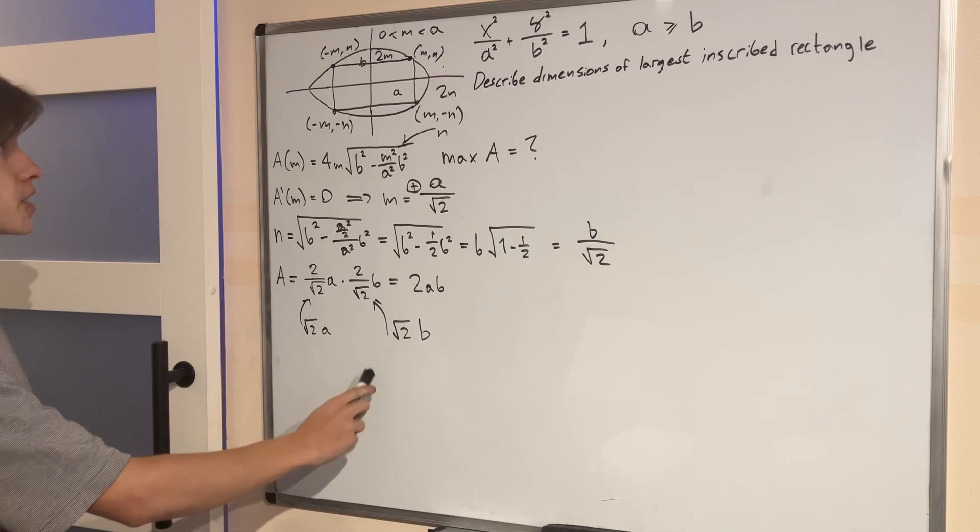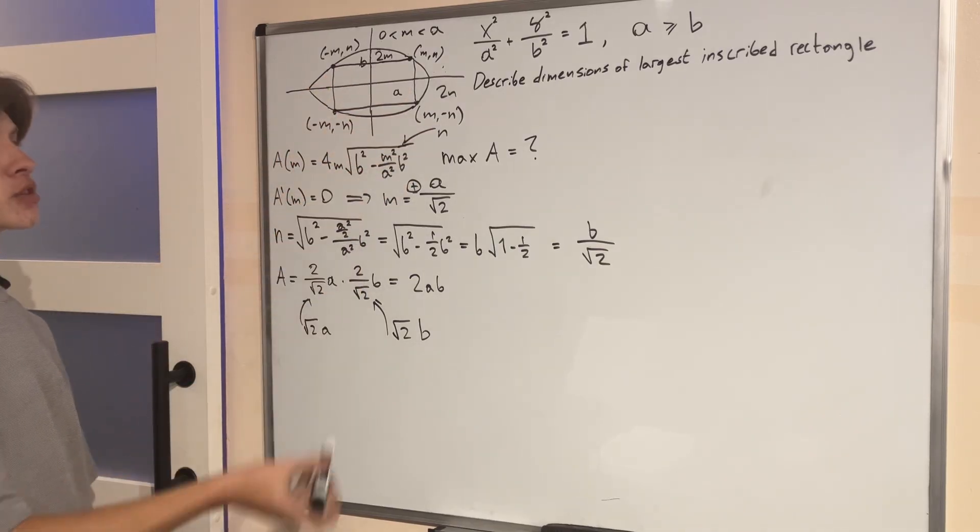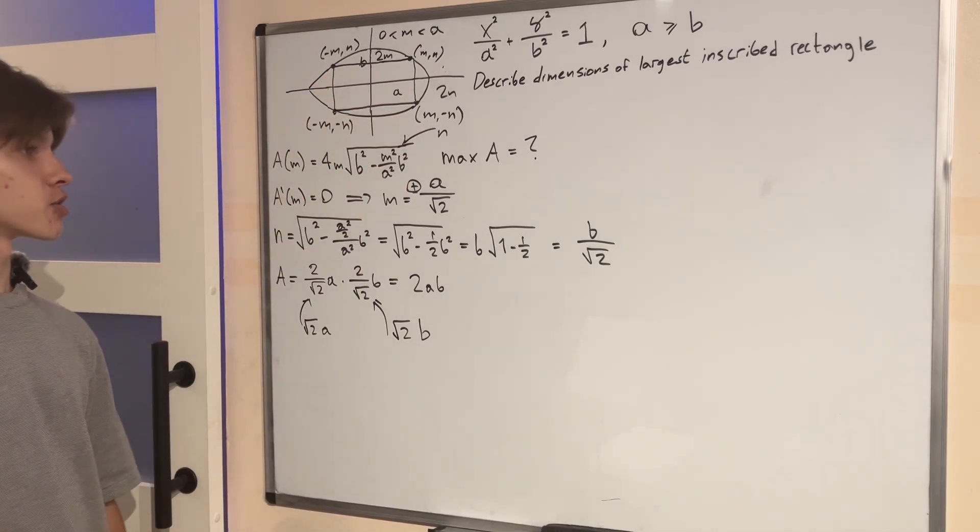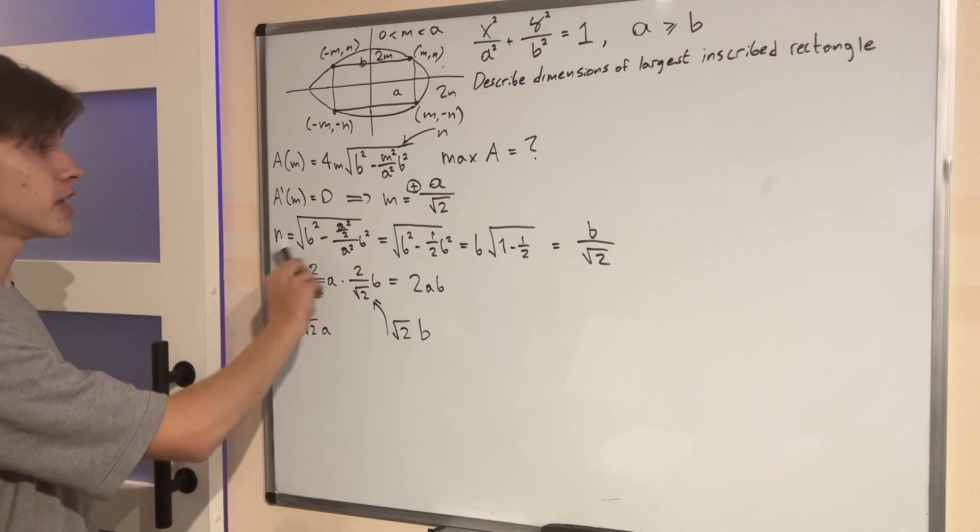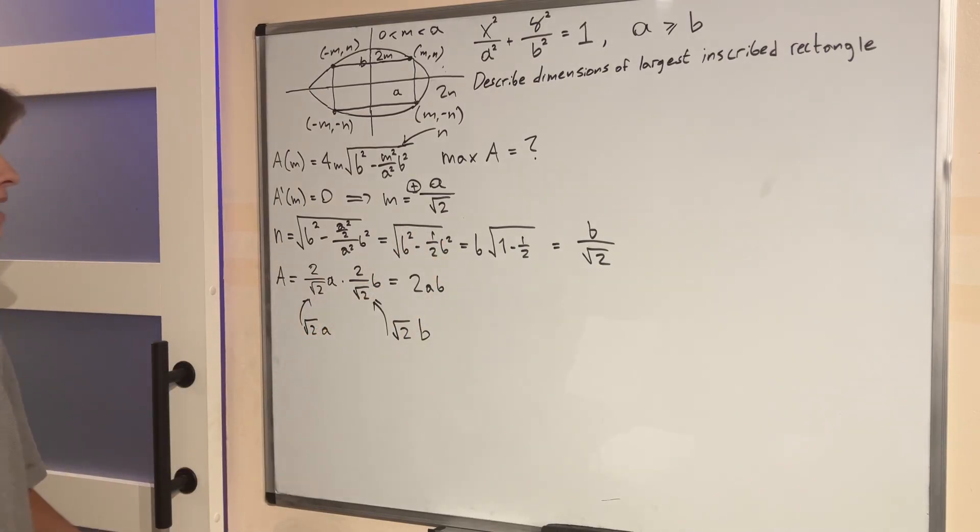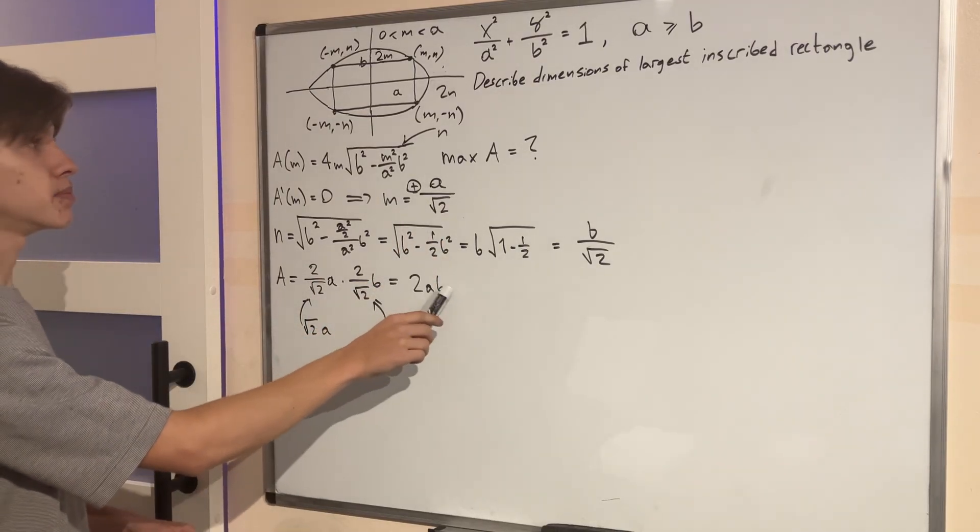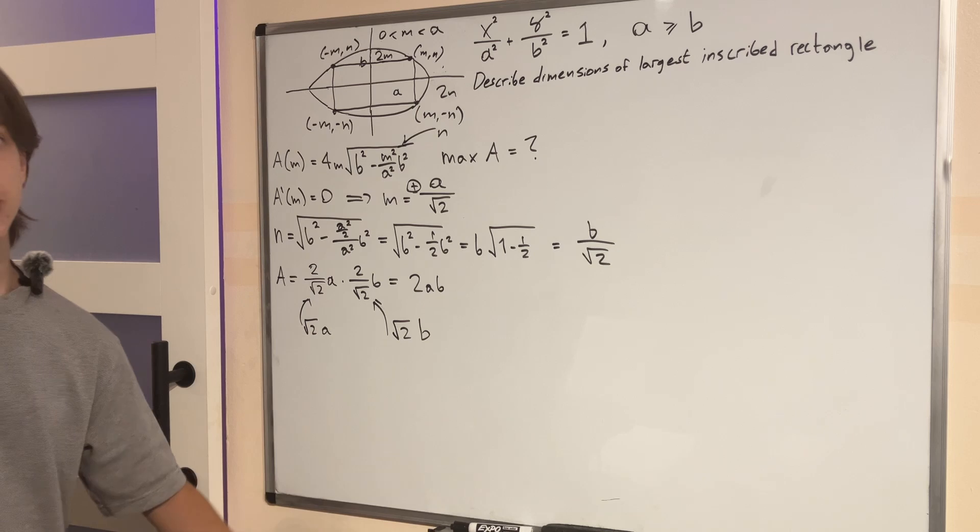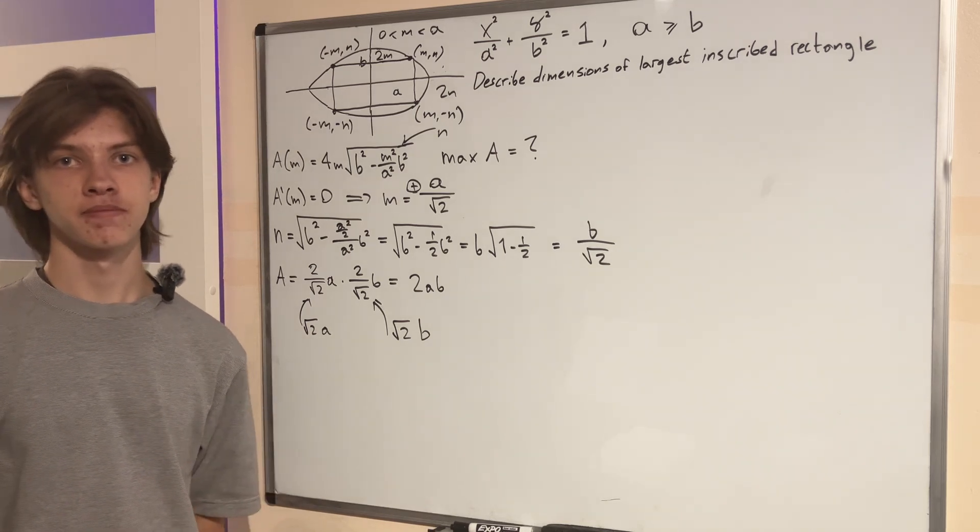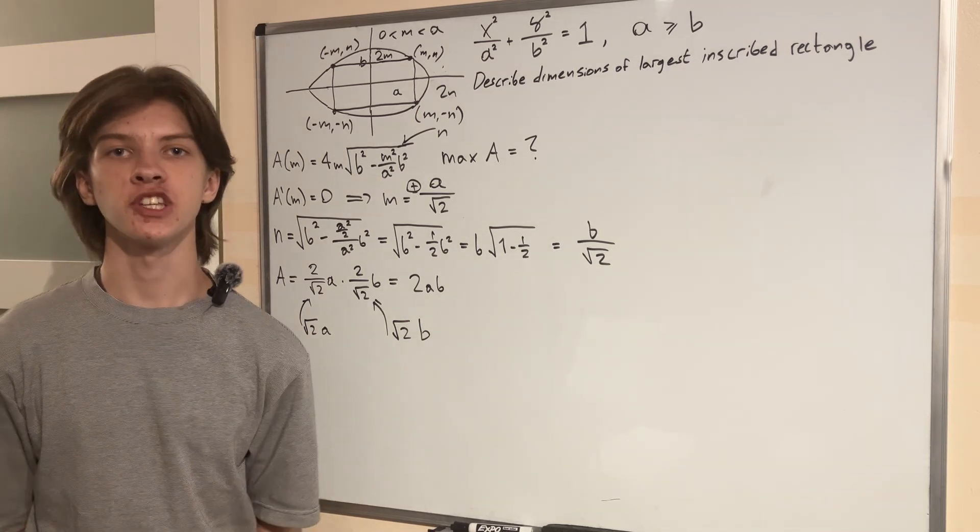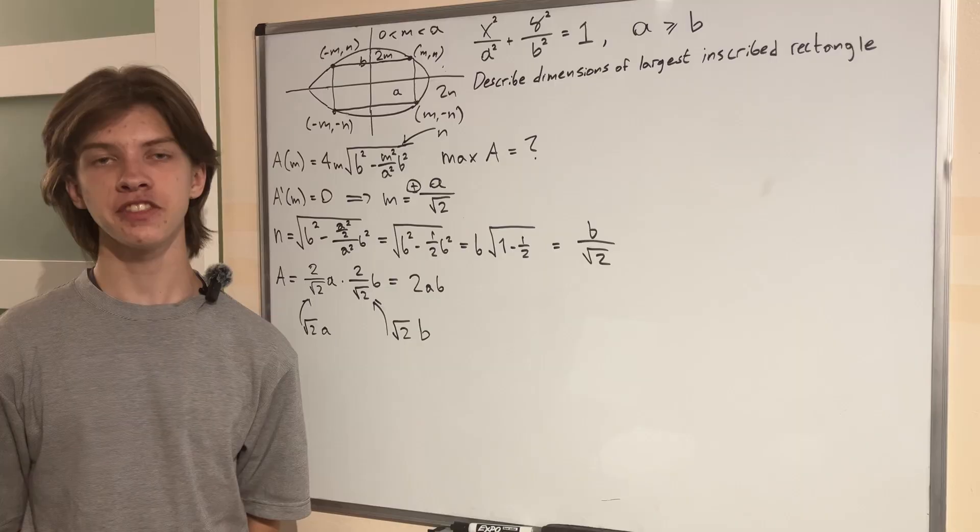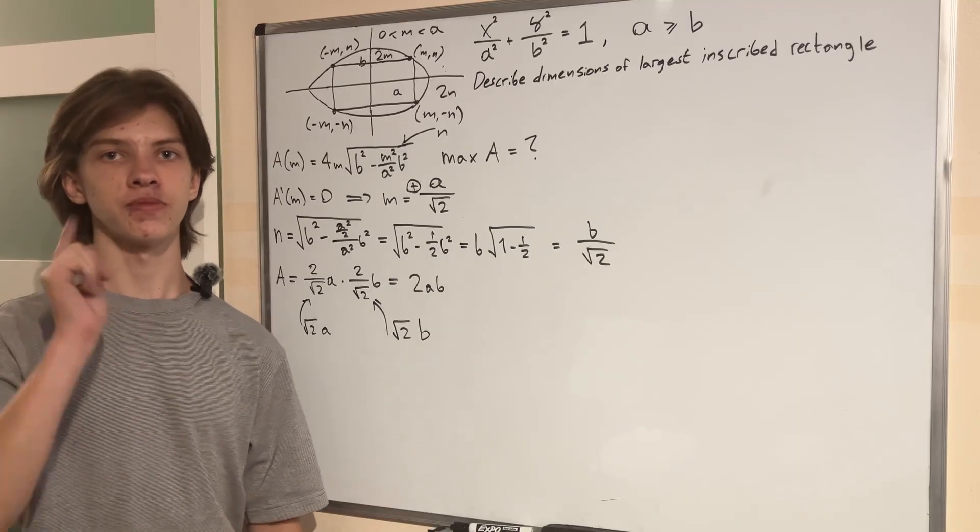So our problem, these are the dimensions of the rectangle of maximum area inscribed in the ellipse. The points M and N we have found are going to be as such, and the maximum area will equal 2AB, which I think is a very nice and symmetric fact. So that is it for today's video. Thank you all for watching to the end, it means a lot, and I will see you next Wednesday.